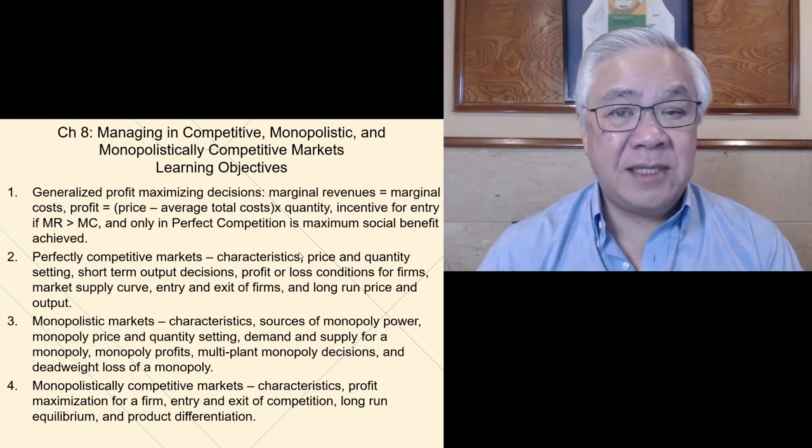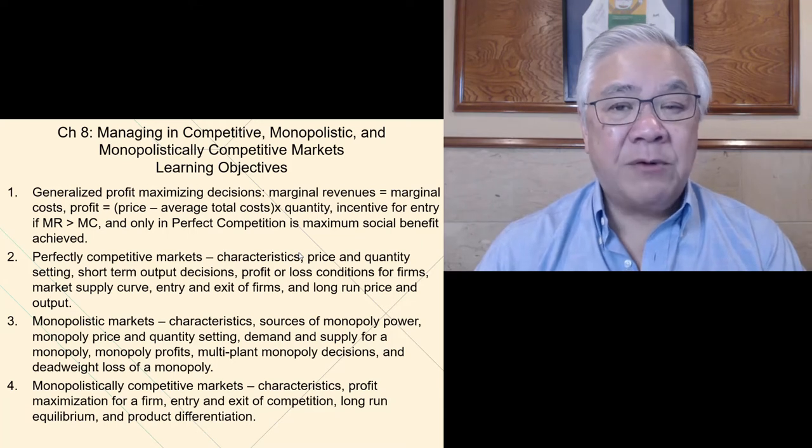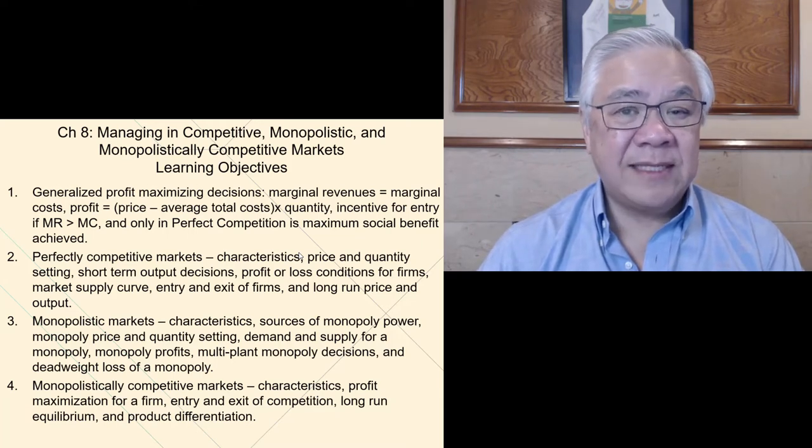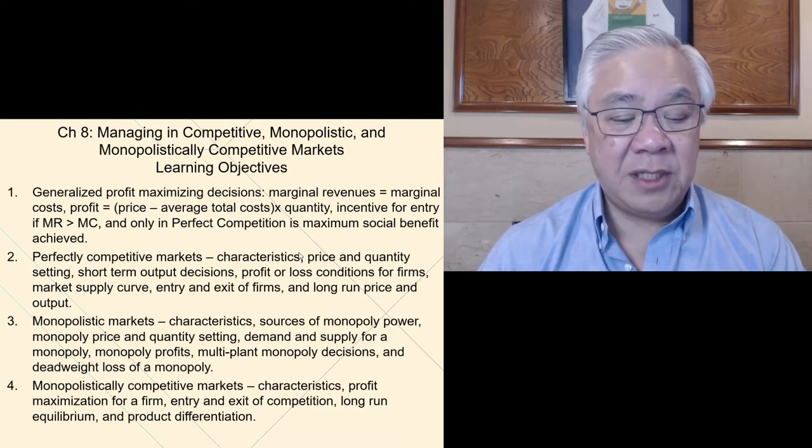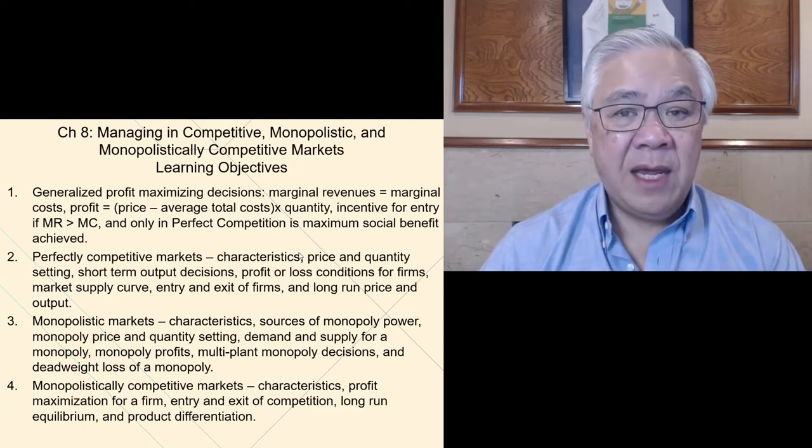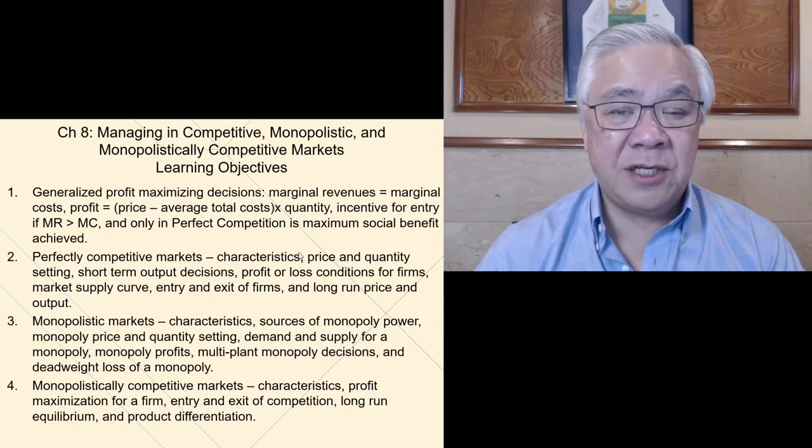And the third is monopolistically competitive. And what are the characteristics of this type? How do we maximize profit if you're a firm inside this type of industry? What leads to entry and exit of competition? And again, long-run equilibrium. And why in this particular type, we see quite a bit of product differentiation and innovation.